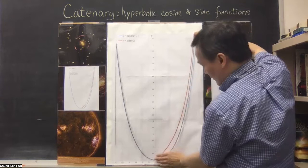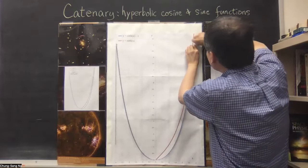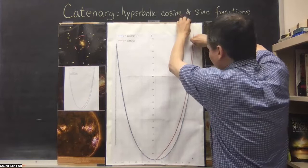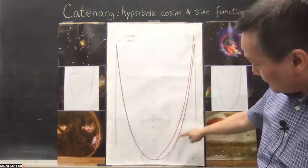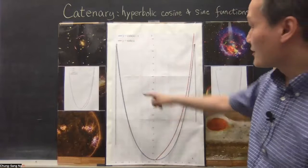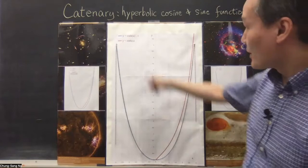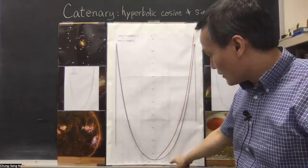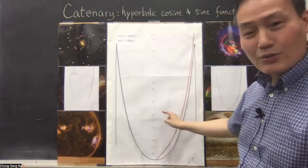Now you can see that the chain is very much on top of the blue curve. So this blue curve is the cosh function minus one, and this is the chain — the shape of the chain, the catenary, is given by this function. When you print it out, make sure that each unit in X and Y are the same length, so that a one-by-one square in the graph is actually a square on the paper.